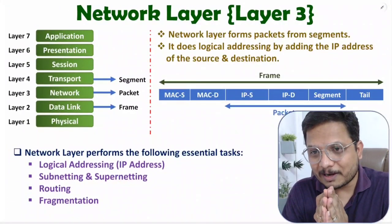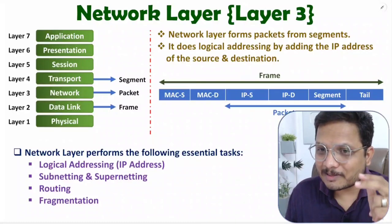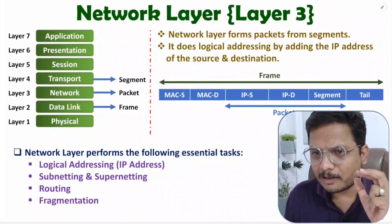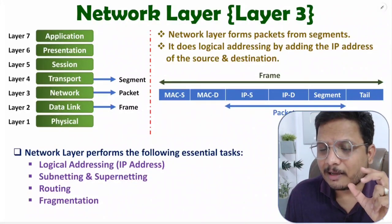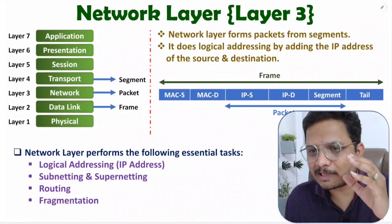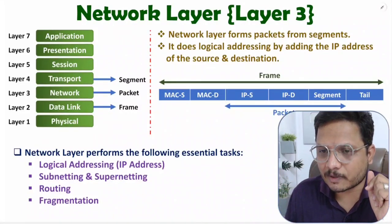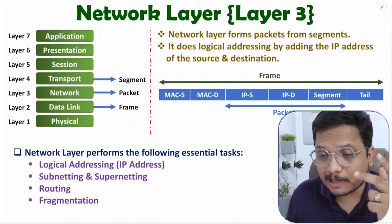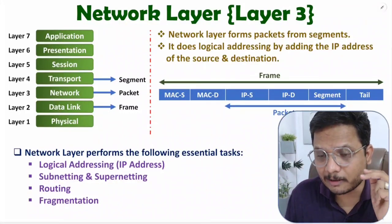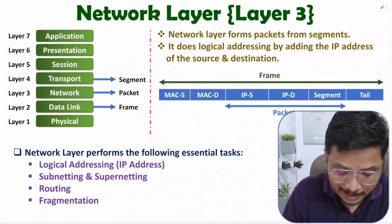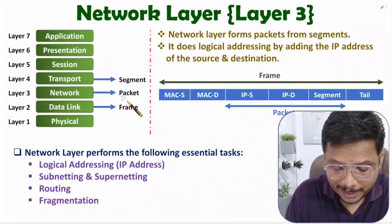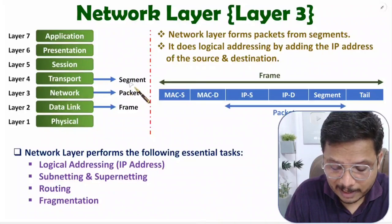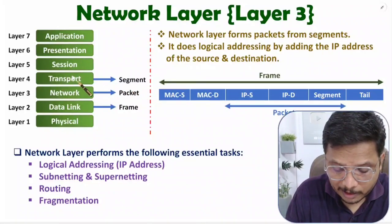Hello friends, welcome to Engineering Panta family. In this video I'll be starting with a new chapter based on the network layer. I'll explain each and every key component of network layer. Network layer is layer number three of the OSI model. The output of network layer is packets, and the input is segments, which are generated by the transport layer.